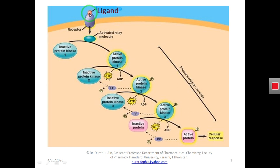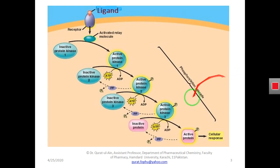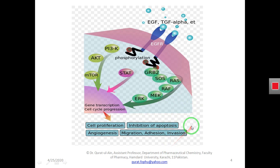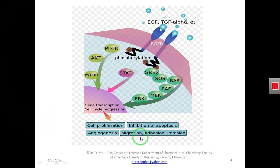Signal transduction is a process in which a signal in the form of a ligand sends an extracellular message through a receptor into the cell cytoplasm, reaching the nucleus as a cascade. The cellular response is any cell activity — it could be cell proliferation, cell migration, angiogenesis, or inhibition of apoptosis — any cell activity that is initiated when a ligand binds to the receptor on the cell surface.